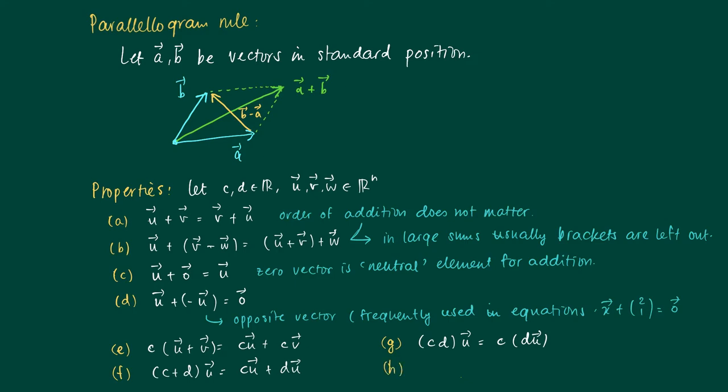And h, finally, the last property I will mention here is that one times the vector u equals the vector u. So one is a neutral element for scalar multiplication.